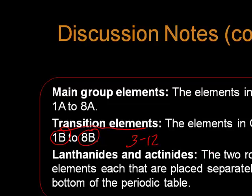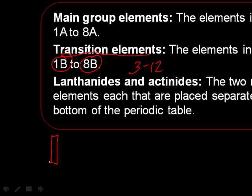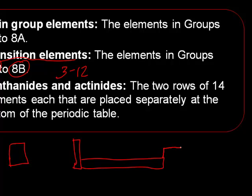The lanthanides and actinides, these are the two rows that are placed separately at the bottom of the periodic table. The reason they're placed separately at the bottom of the periodic table is just like the transition elements were stuck inside. The transition elements. The same thing is true about the lanthanides and actinides. The only reason they're put at the bottom is because if you stick them in the periodic table where they're supposed to go, they would extend out the periodic table much larger than it needed to be.